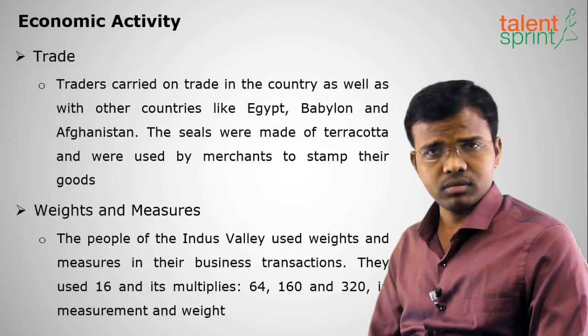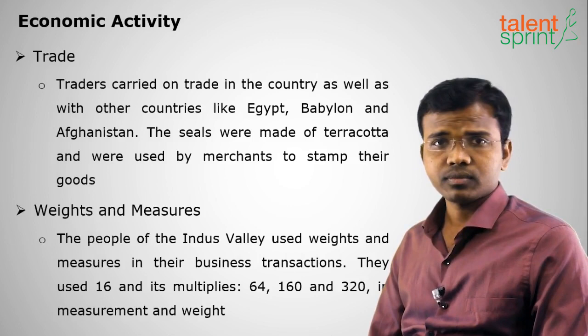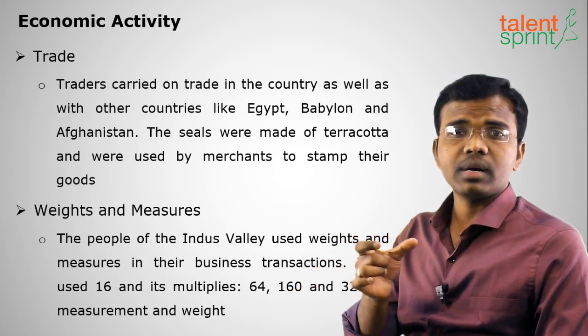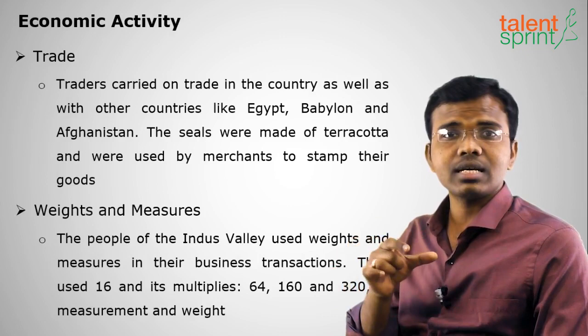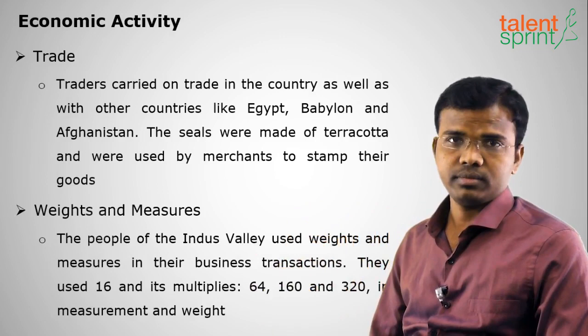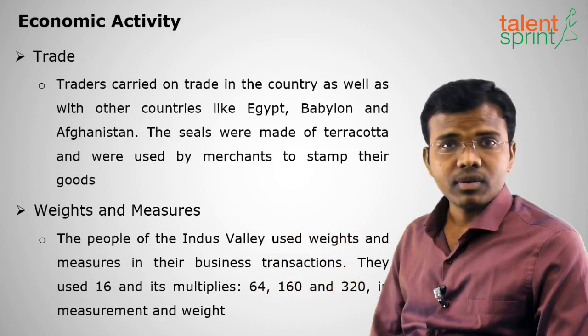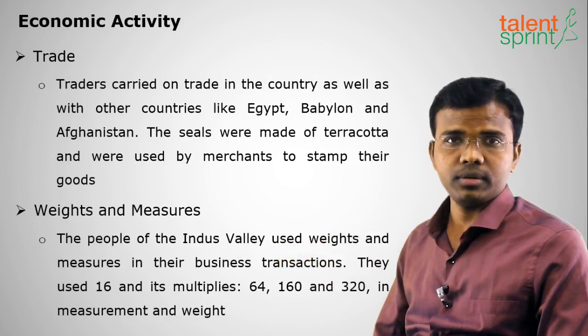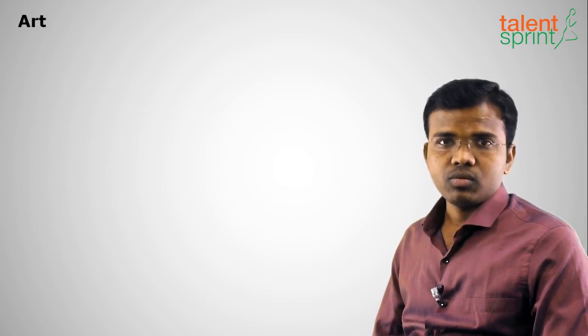As for trade, they made many figurines and produced grain which they exported to Egypt, Babylon, and Afghanistan. They also used weights and measures in the market, and these weights were in multiples of 16 — such as 16, 160, and 320. This is why the concept of 16 annas equal to 1 rupee is derived from the Indus Valley people.